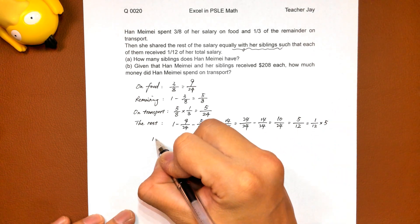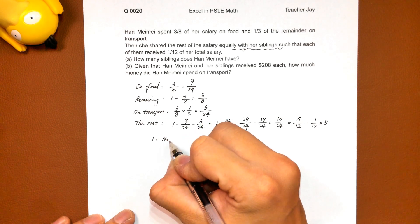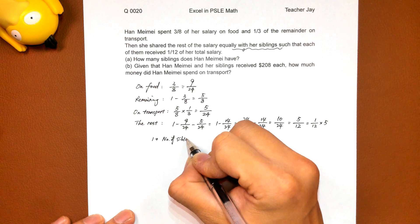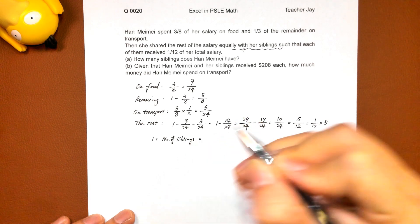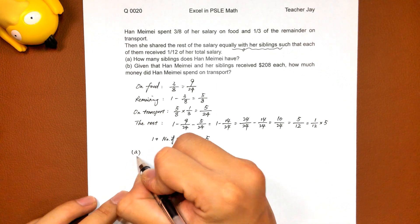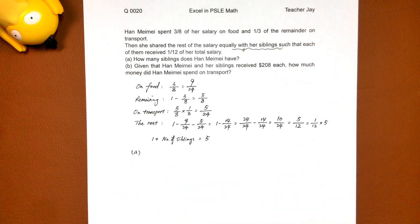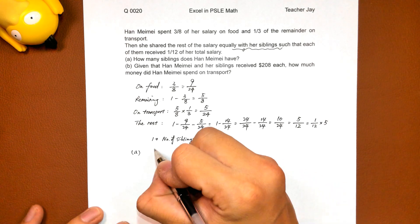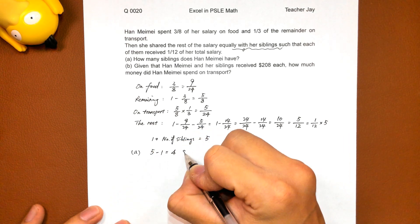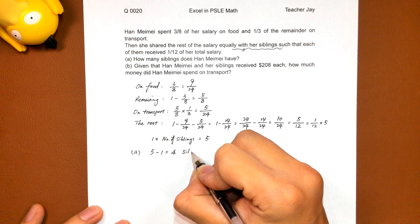That means one plus number of siblings equals five. So how many siblings does Han Mei have? Five minus one equals four. Four siblings.